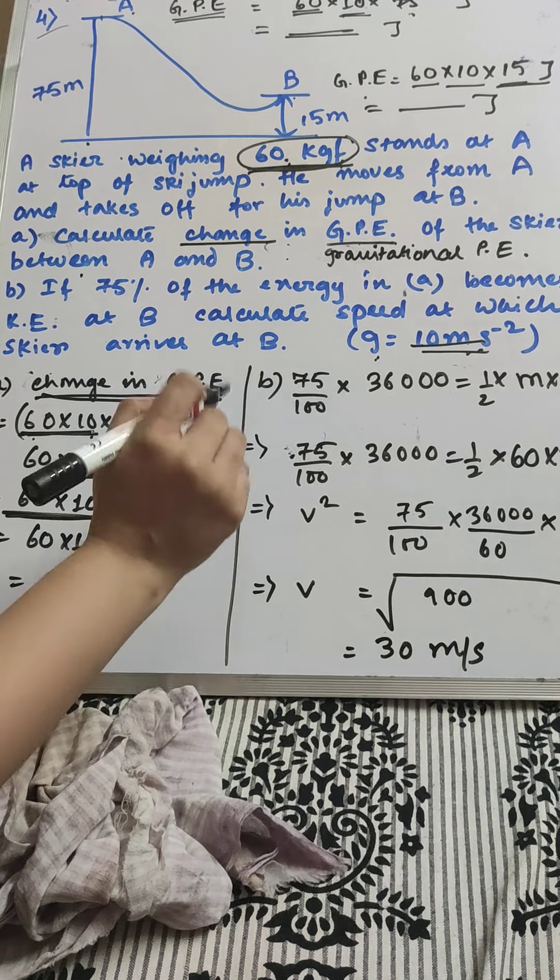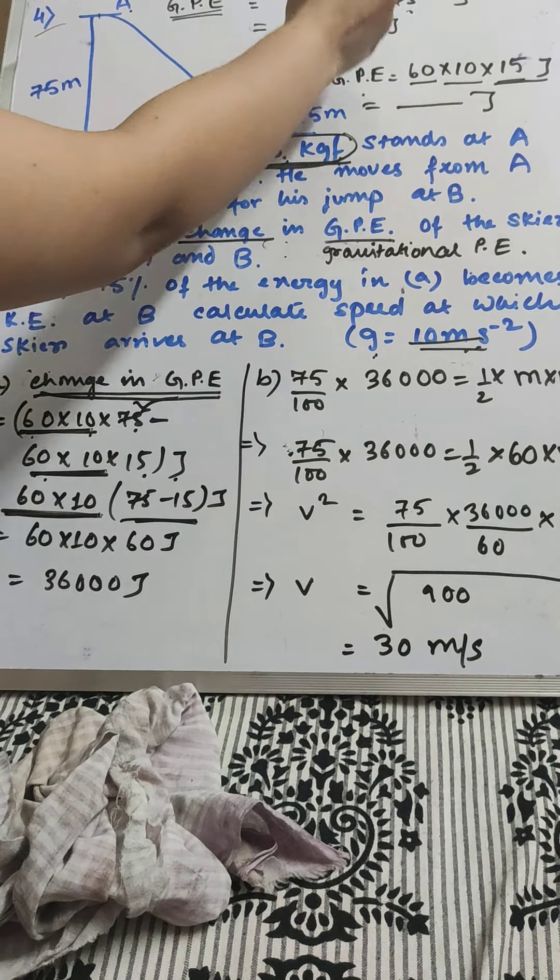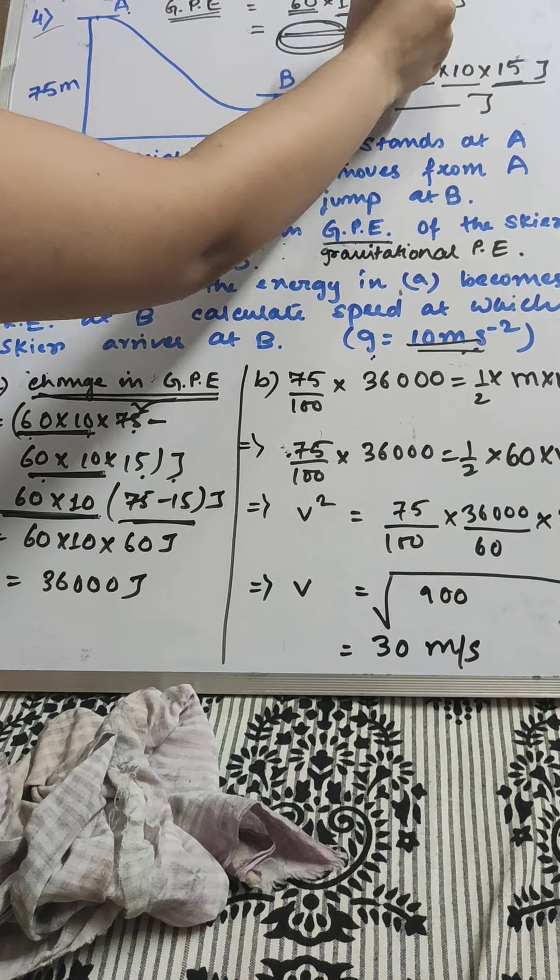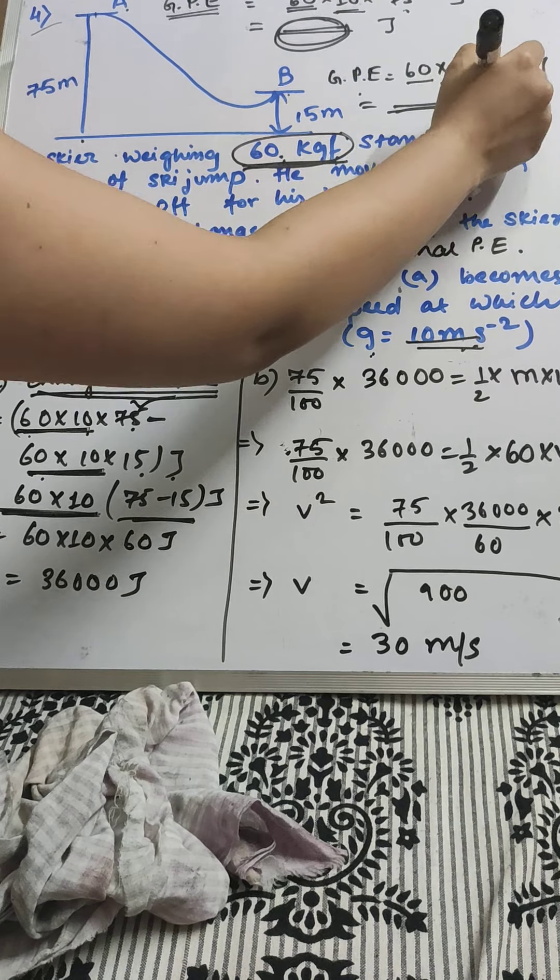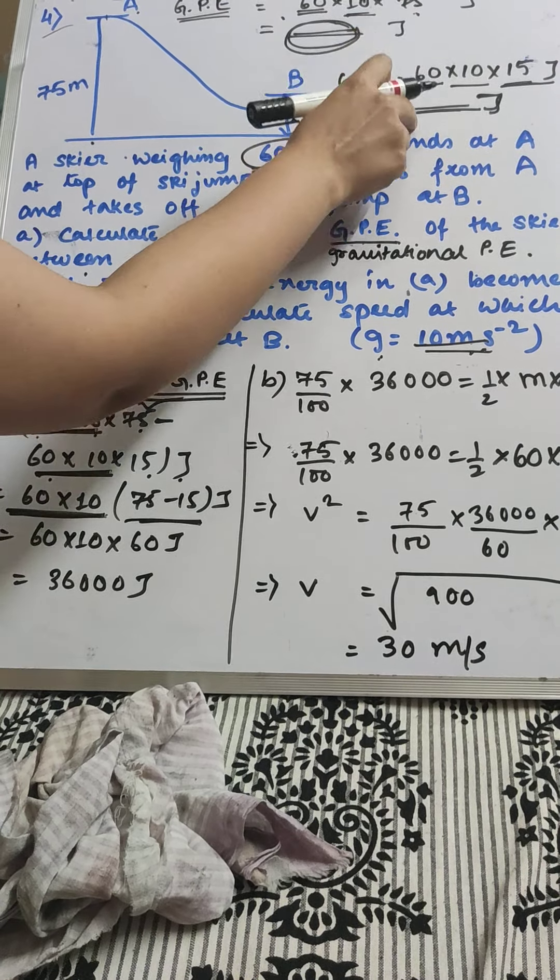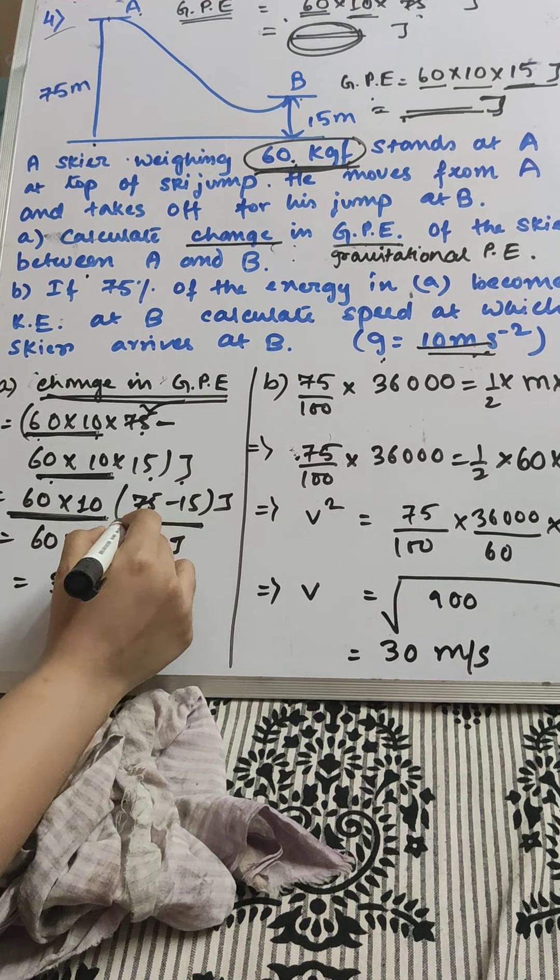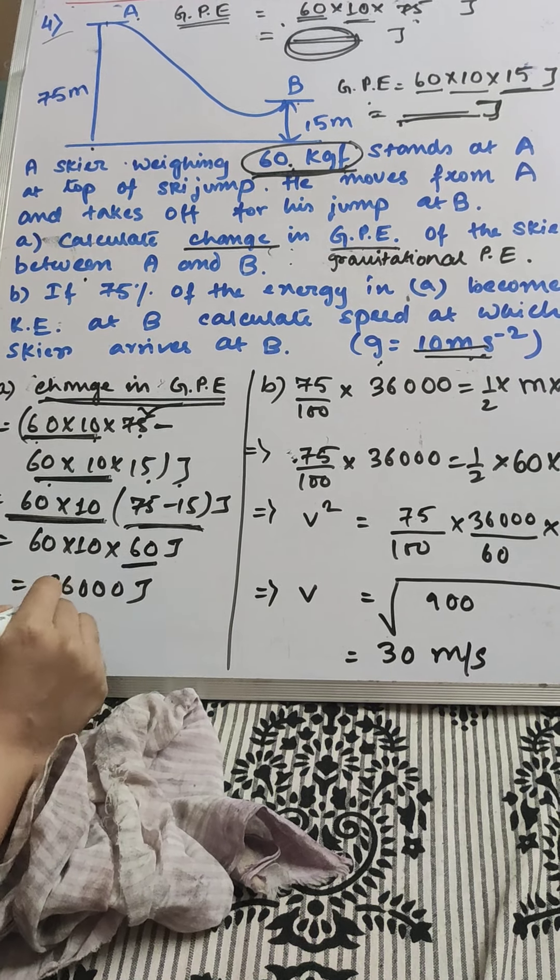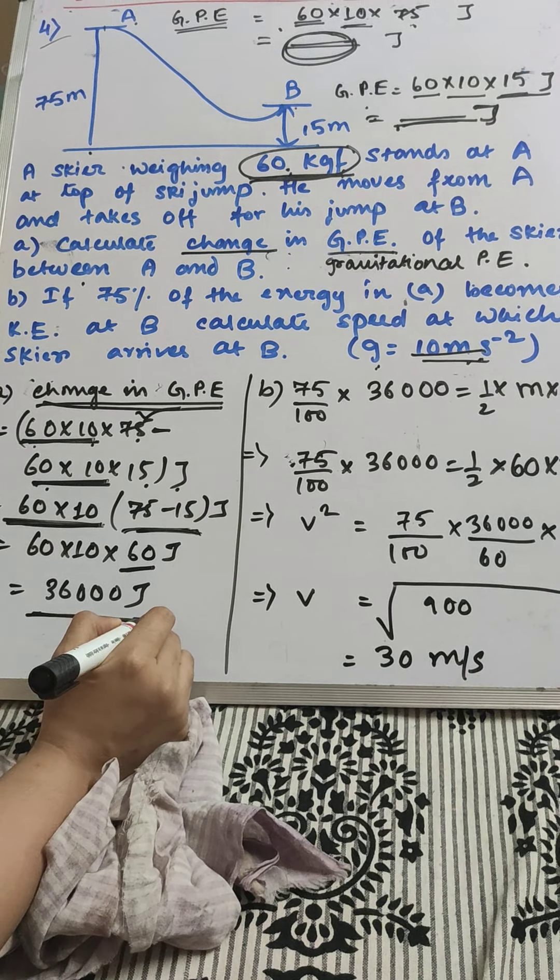Change in gravitational potential energy: 60 into 10 into 75, minus 60 into 10 into 15 Joule. We are just taking 60, 10 common. In both cases we have 60, 10, just taking out 60, 10, we are left with 75 minus 15. A minus B. So we are getting the result as 36,000 Joule.